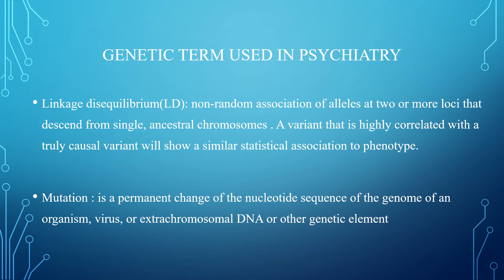Linkage disequilibrium is the non-random association of alleles at two or more loci that descend from a single ancestral chromosome. A variant that is highly correlated with a truly causal variant will show a similar statistical association to phenotype. Linkage disequilibrium is a non-random association of alleles from different loci, but they have a similar ancestral chromosome. Mutation is a permanent change of the nucleotide sequence of the genome of an organism, virus, or extrachromosomal DNA or other genetic elements.